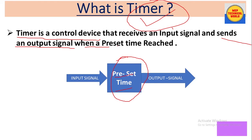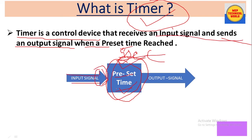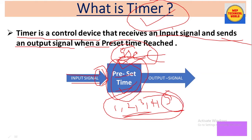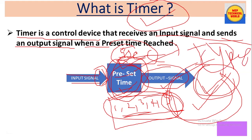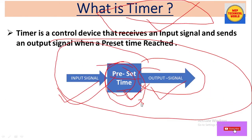Suppose we have set five seconds. When this timer gets an input signal, it starts counting the time: one, two, three, four, five. When it reaches the preset time value, only then will it give the output signal, allowing us to operate a load as required. The count depends upon the type of timer — for example, on delay or off delay timer.